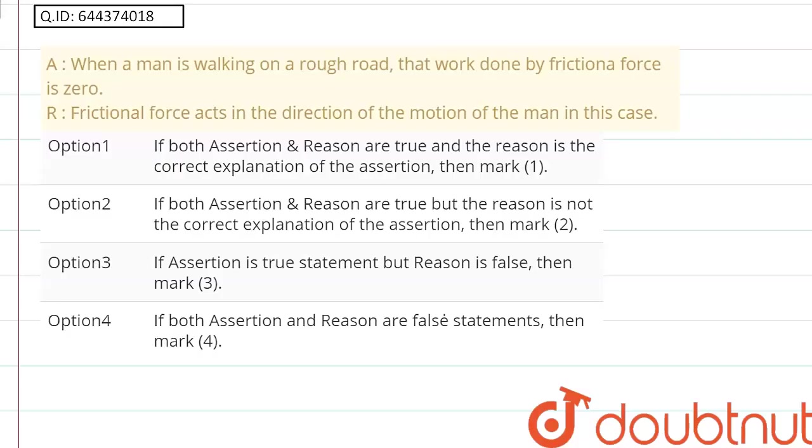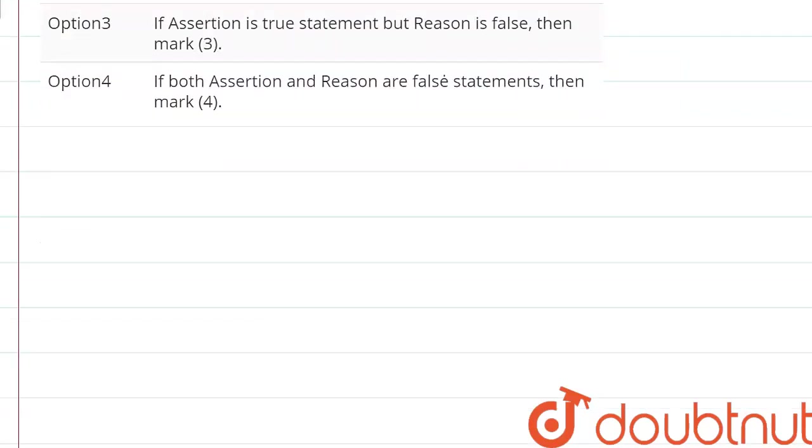Hello friends, the problem is: the assertion given to us is when a man is walking on a rough road, the work done by the frictional force is zero. This statement is true. Why? Because suppose this is the rough road with some value of mu that is non-zero, and a man is walking on this road in this direction.